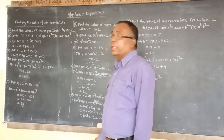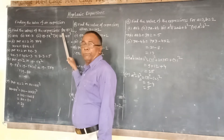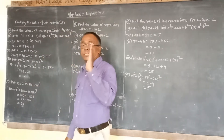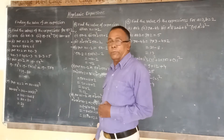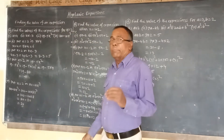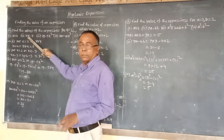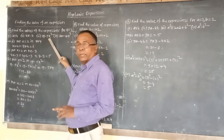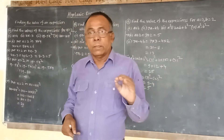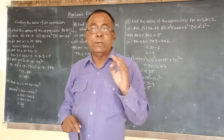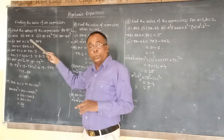The first example is: find the values of the expressions for x equal to 2. Four expressions are given — the first is x plus 4, the second is 4x minus 3, the third is 19 minus x squared, and the fourth is 100 minus 10x squared. We have to substitute the value of the corresponding variable, since x equal to 2 is given, we put x equal to 2 in each expression.